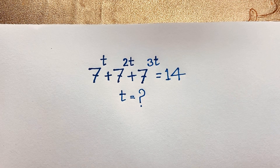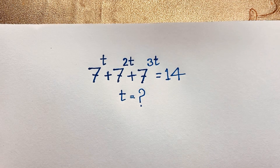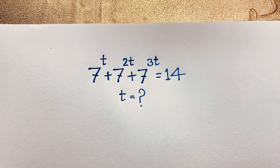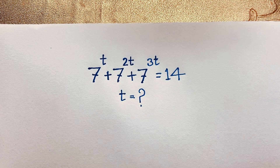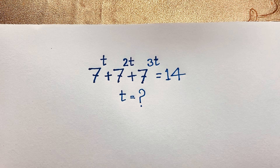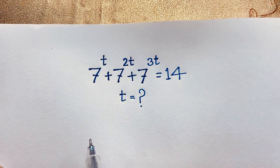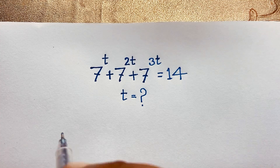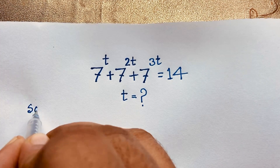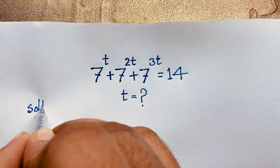Hello everyone, welcome to Russell's Classroom. Today we have solved an interesting viral math olympiad question which is 7 to the power t plus 7 to the power 2t plus 7 to the power 3t is equal to 14, and t is equal to what? I solved this question using an easy method and easy steps.